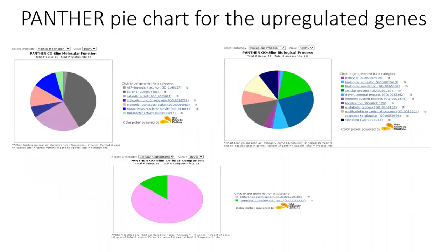PANTHER, Protein ANalysis THrough Evolutionary Relationships, was used to classify and identify the function of these integrated genes. These genes were introduced to PANTHER, and the results were presented in the form of pie charts covering PANTHER family, protein class, molecular function, biological process, cellular component, and pathways of all identified genes.